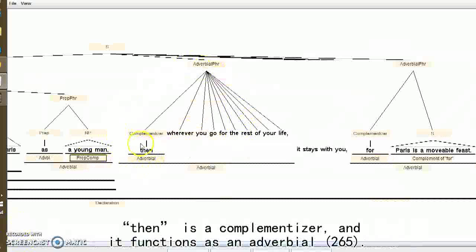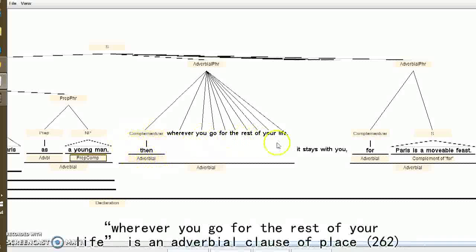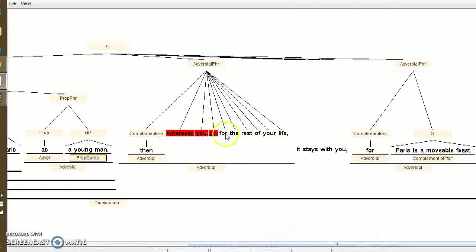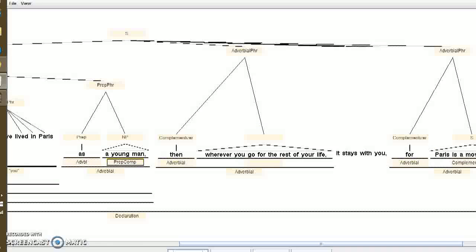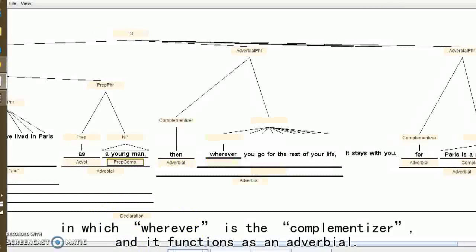Now the next part. Then is a complementizer and it functions as an adverbial. The rest of this part is the complement of then. Wherever you go for the rest of your life is an adverbial clause of place, in which wherever is the complementizer and it functions as an adverbial.